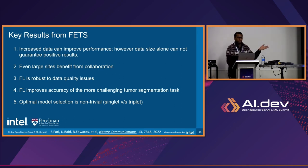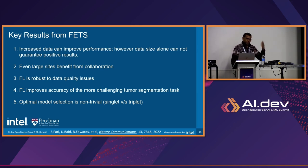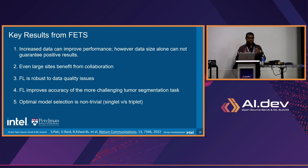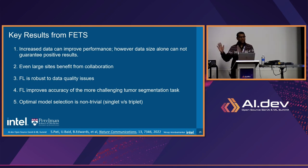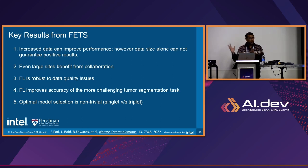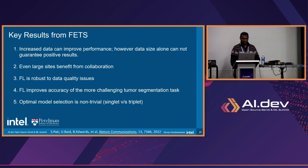The key results of the FETS and Intel-UPenn initiative: increased data can improve performance, but data science alone cannot — data quality and labeling matter. Large sites can also benefit from collaboration with increased data. FL is robust enough for data quality issues — we did find some sites mislabeled their input data, but federated learning did not throw the results off too much and we still converged to the accuracy mentioned. Both singlet and triplet model approaches — one model for all three segments or three separate models — gave very similar results.